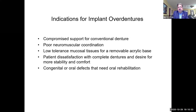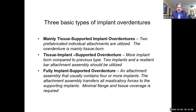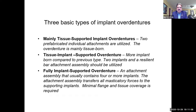Let's talk about the three different types of implant dentures. First, tissue-supported overdentures use two prefabricated individual attachments and the overdenture is mainly tissue-borne. Second, tissue-implant supported overdentures are more implant-borne, utilizing two implants in a resilient bar with a resilient attachment assembly. Third, fully implant-supported overdentures typically contain four to six or more implants, where the attachment assembly transfers all masticatory forces to the supporting implants and minimal flange and tissue coverage is required.